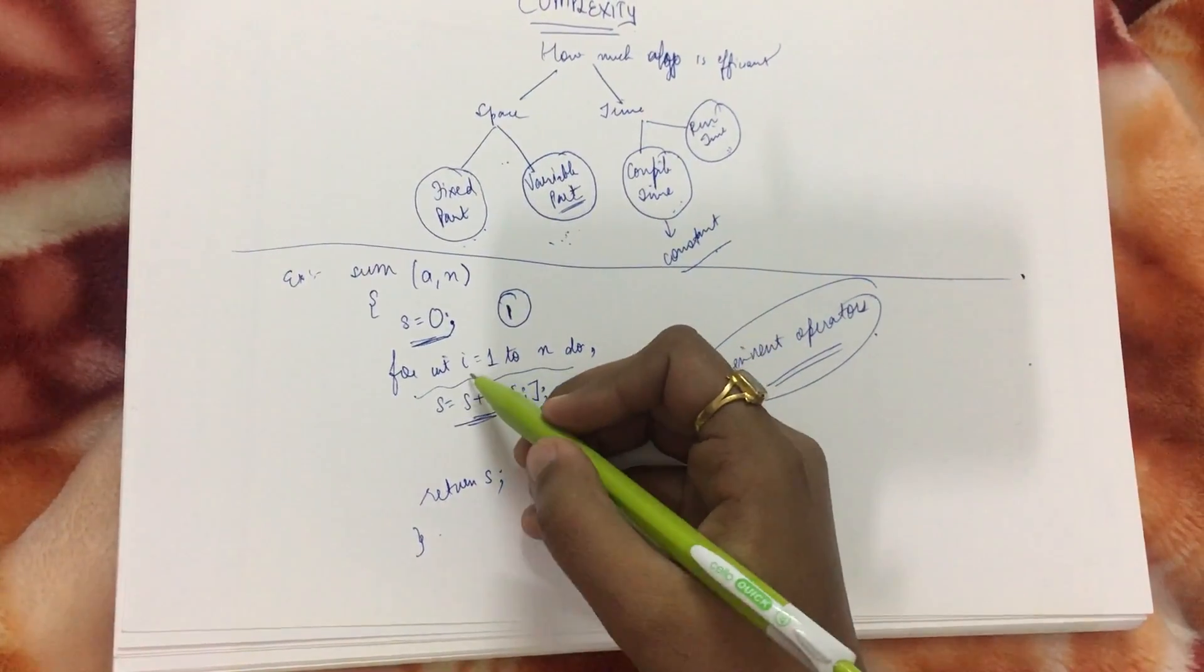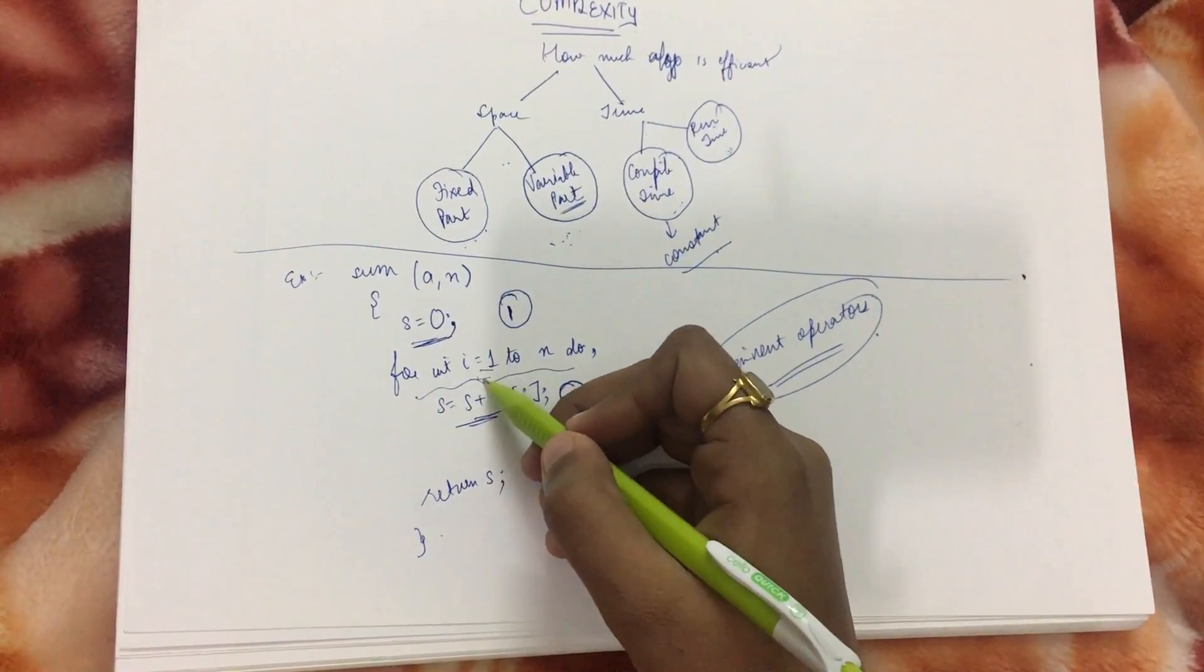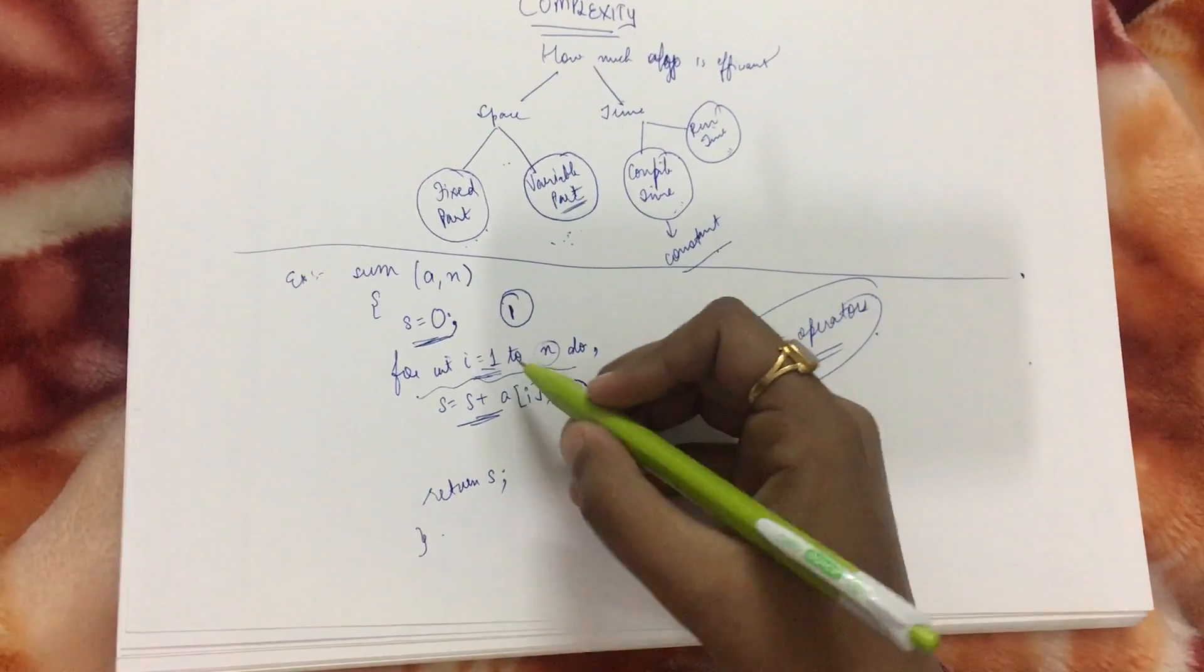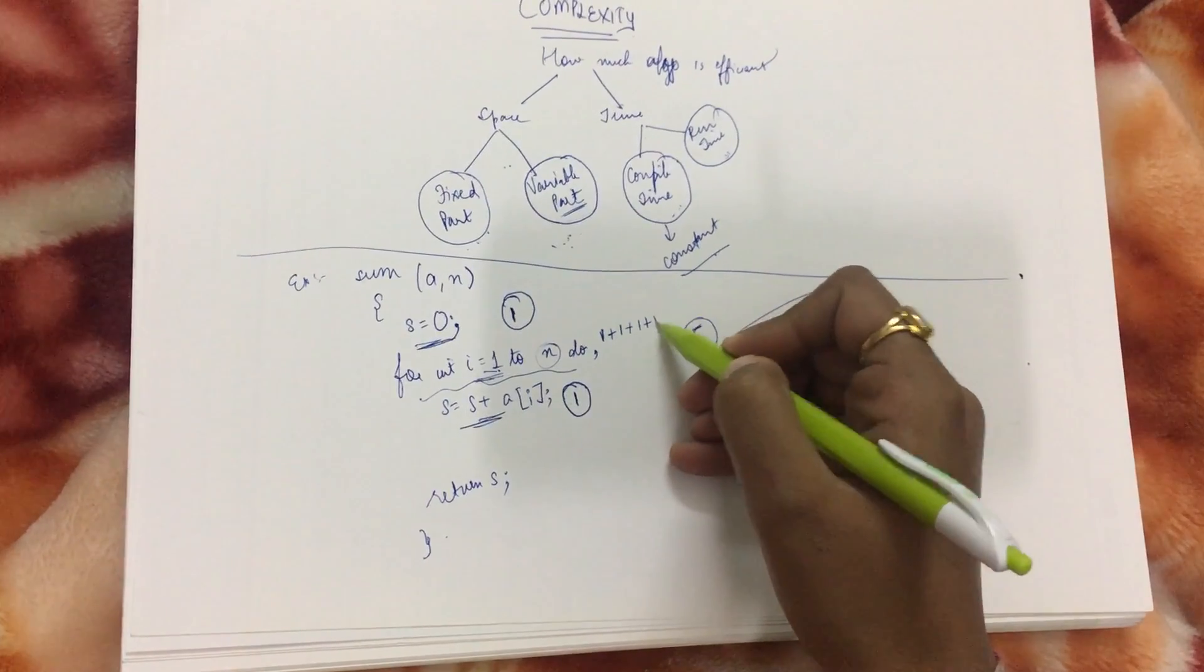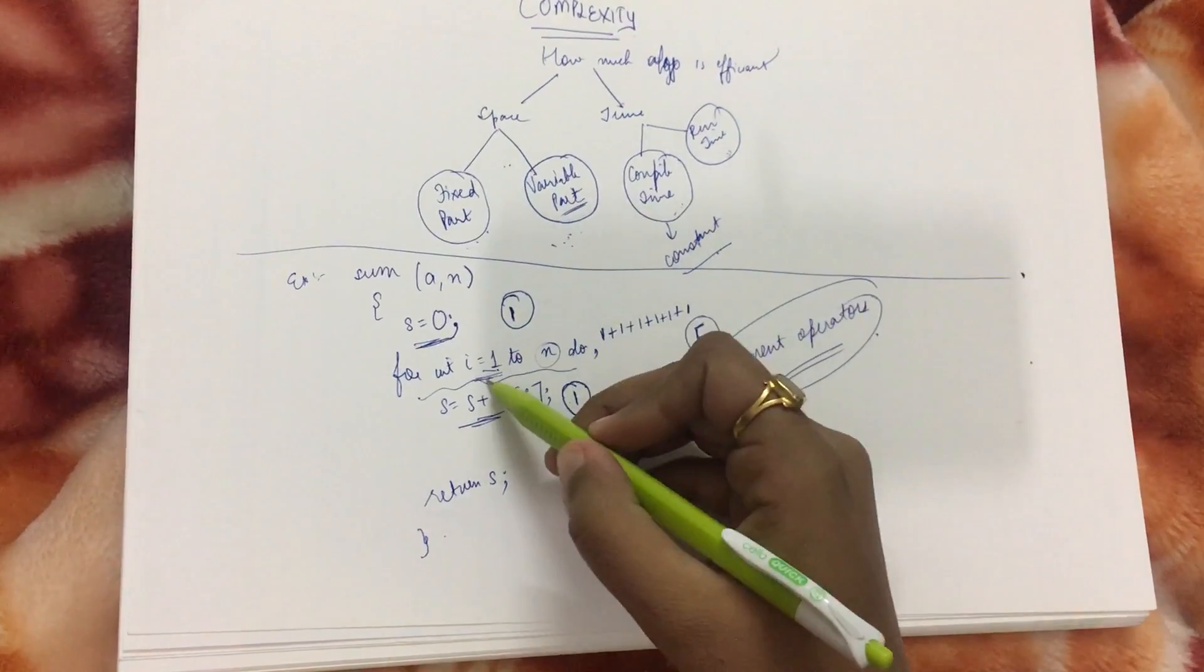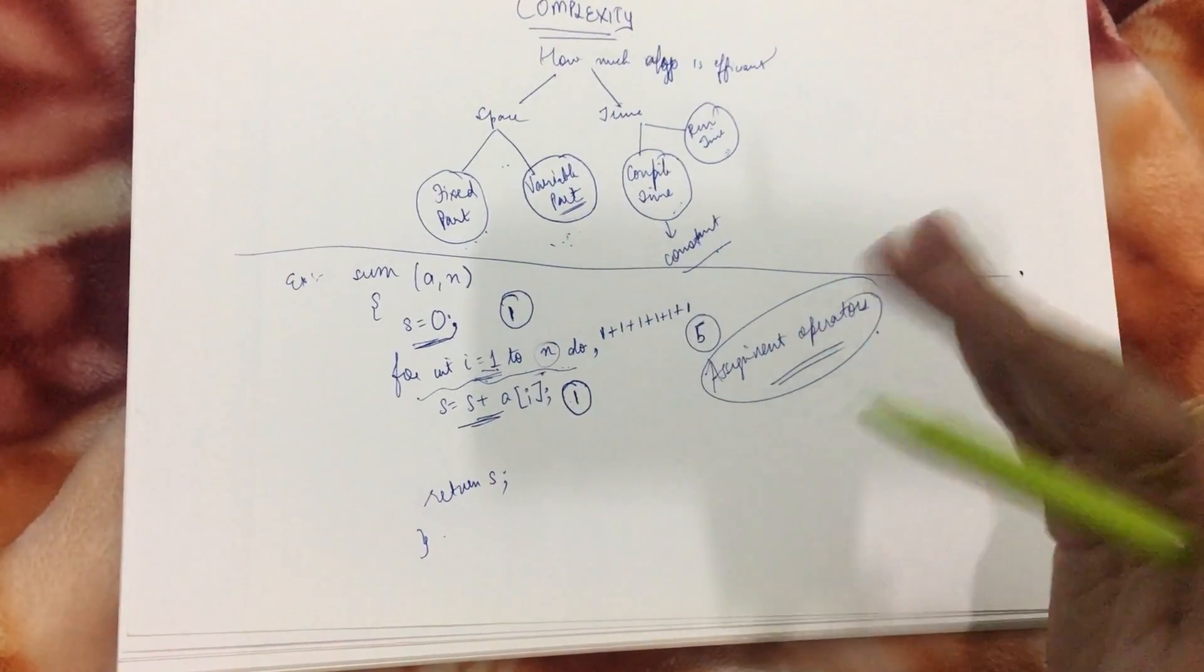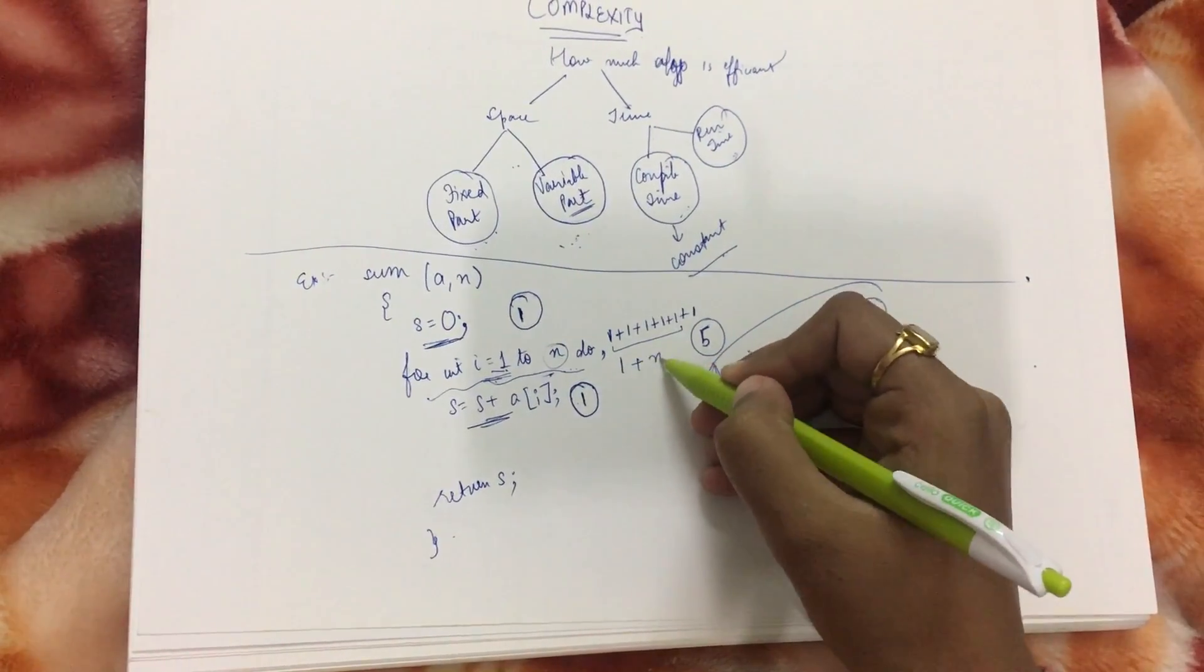For this for loop statement, first it will say i equals 1, then i equals 2, i equals 3, i equals 4, i equals 5. Suppose I have n as 5. i equals 1, i equals 2, i equals 3, i equals 4, i equals 5. When i becomes 6 and then it checks the condition, it is not true, but it executed for i equals 6 once. It executed for the false condition also, so the complexity here becomes 1 plus n.